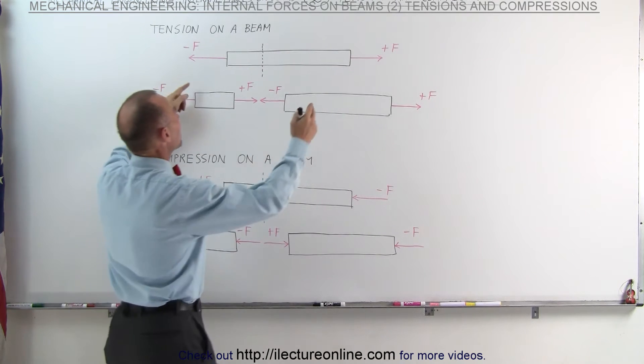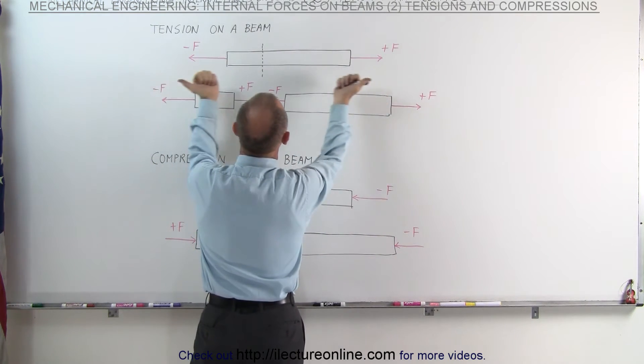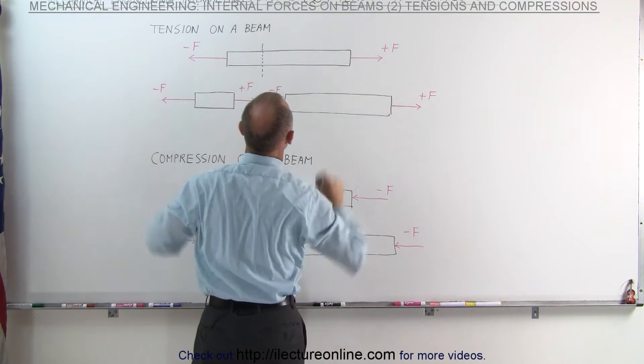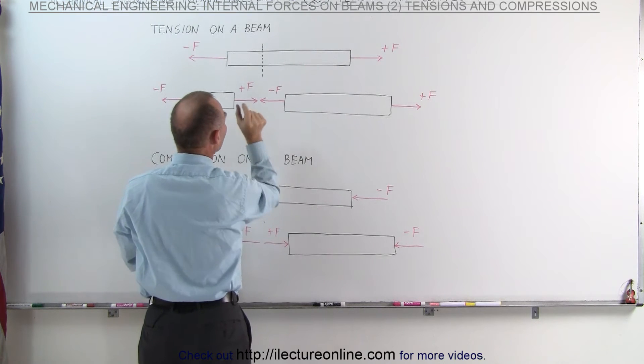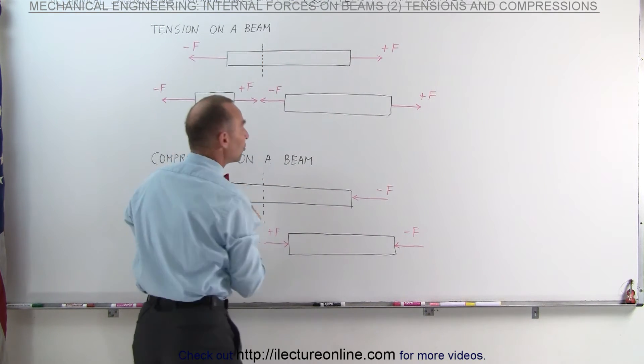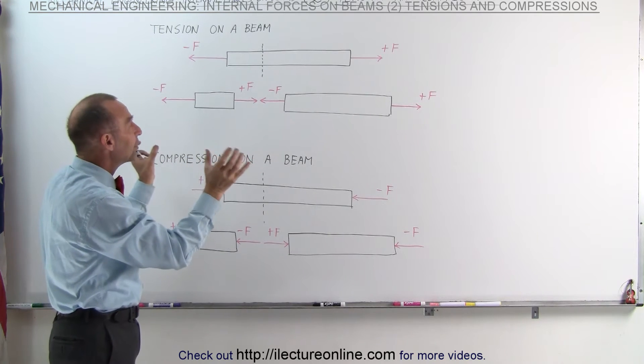Imagine that we have a beam and the beam is currently under tension, which means forces are pulling on the beam in opposite directions away from the beam. If we then imagine a point inside the beam, what is going on at that particular location? One way to think about that is to separate the beam into two sections.